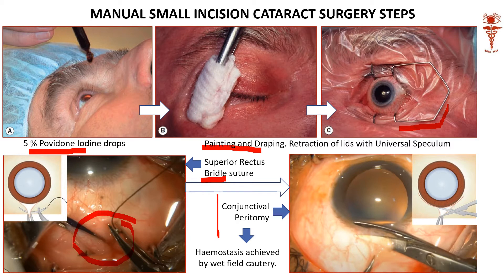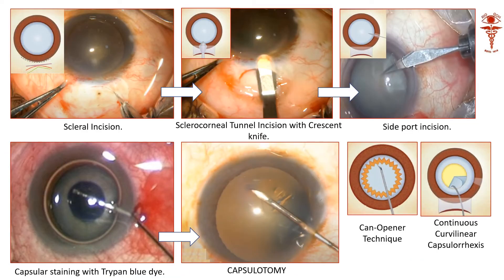Then we do a conjunctival peritomy — we take scissors and cut the conjunctiva at the limbus to reflect the conjunctiva and expose the limbus, where we are going to make the actual incision. If there is any bleeding from this reflected area, we will have to cauterize that area so it is cleared of any bruising of blood.